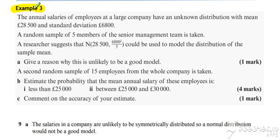And last example then of Lesson 1, Example 3. So this time, annual salaries of employees at a large company have unknown distribution with mean of 28,500 and a standard deviation of 6,800.